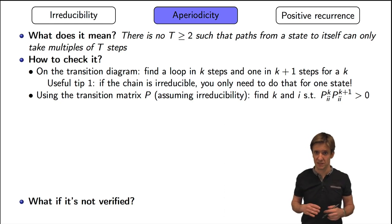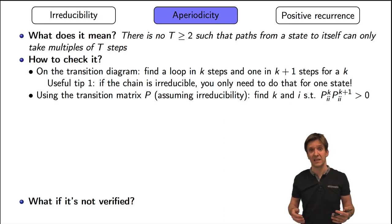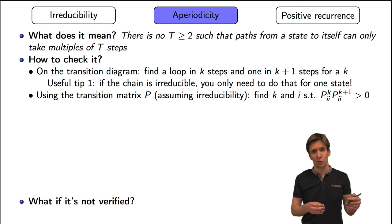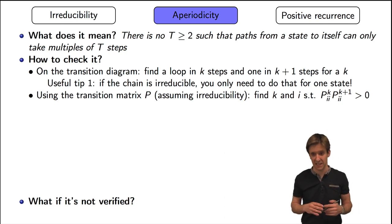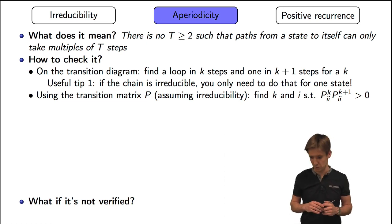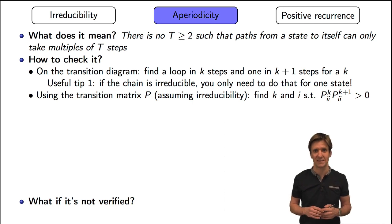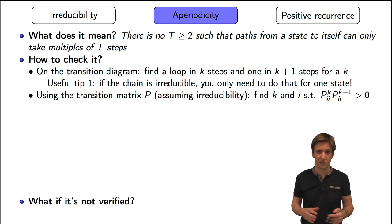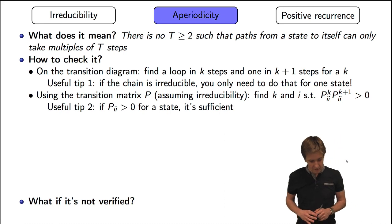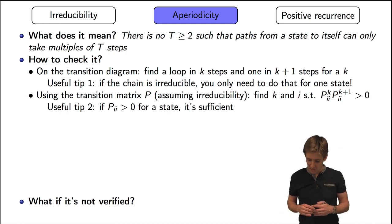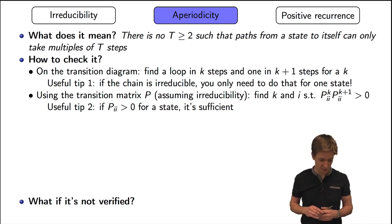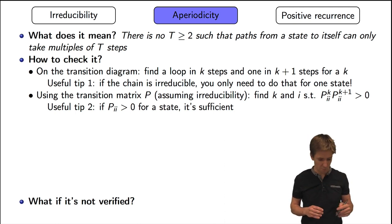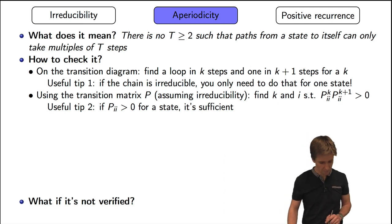I can also do this verification using the transition matrix. I want to find a path with strictly positive probability from i to itself in k and in k plus one steps. So having the term ii of P to the power k strictly positive means there is a path from i to itself in k steps, and similarly for P to the power k plus one. If the product of those two terms is strictly positive, I have what I want. In most cases, if I have an irreducible Markov chain with even one state having a self-transition with strictly positive probability (p_ii > 0), that's sufficient for an aperiodic chain.